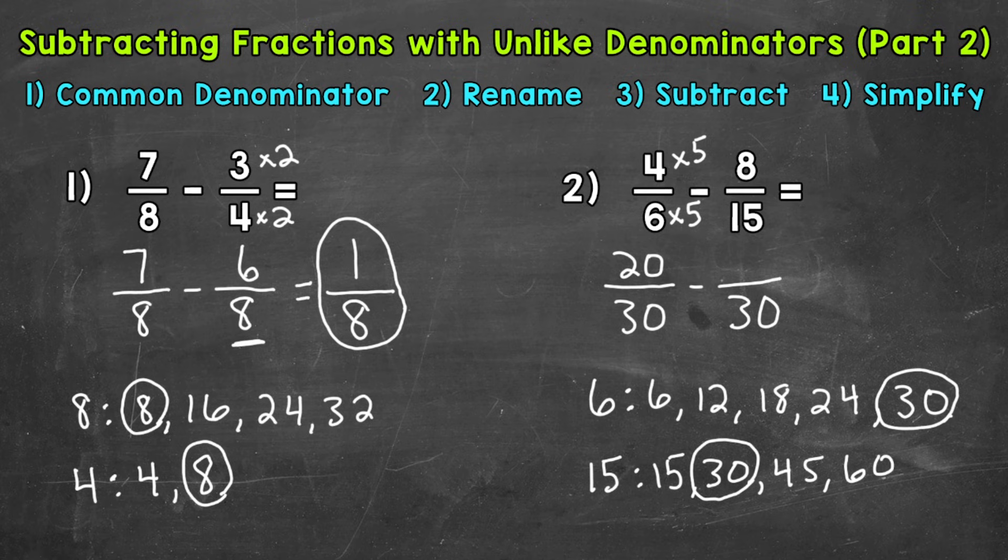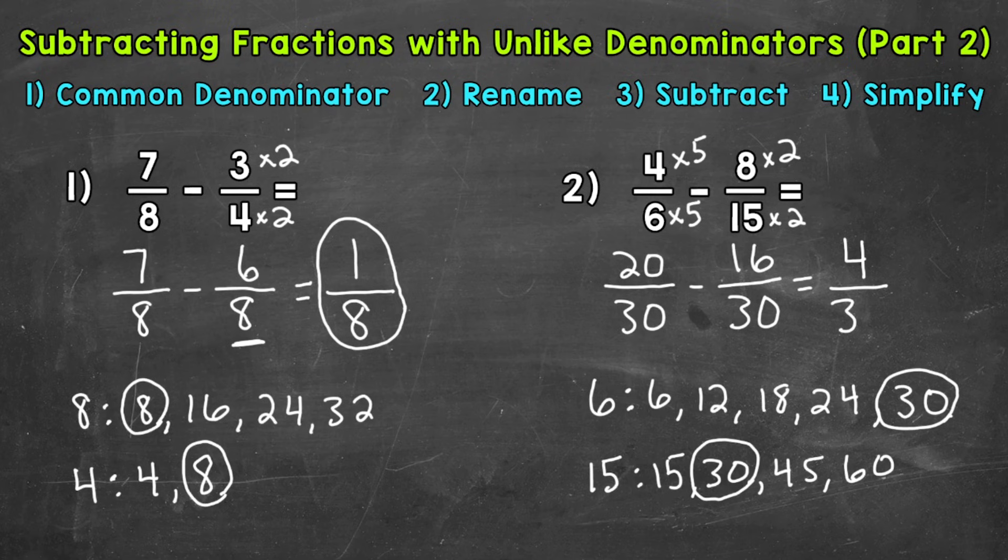Now we need to do 8/15. So 15 times 2 is 30. Do the same thing to the numerator. 8 times 2 is 16. So we have 20/30 minus 16/30. 20 minus 16. Subtract the numerators. That gives us 4. Keep the denominator of 30 the same. So 4/30 is our answer.